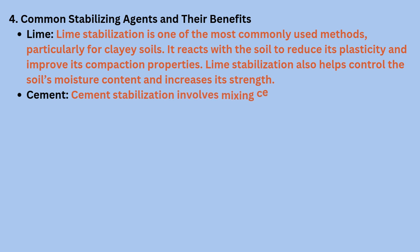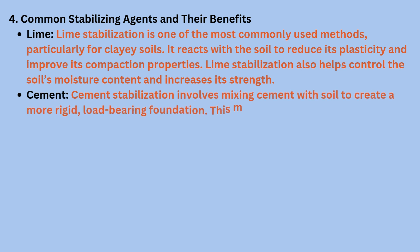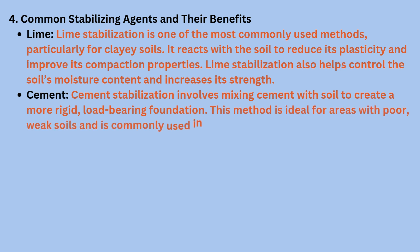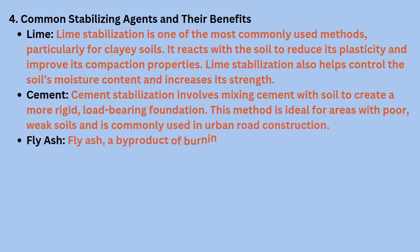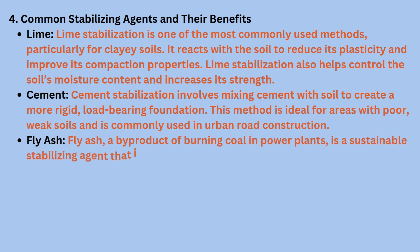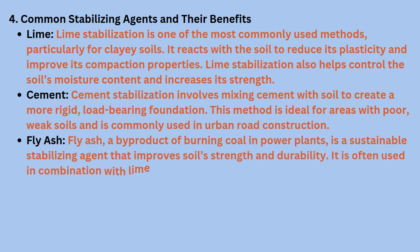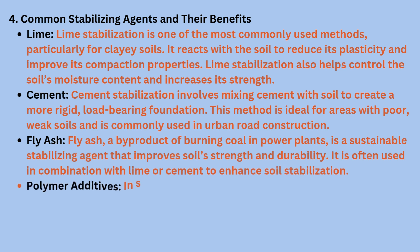Cement stabilization involves mixing cement with soil to create a more rigid, load-bearing foundation. This method is ideal for areas with poor, weak soils and is commonly used in urban road construction. Fly ash, a byproduct of burning coal in power plants, is a sustainable stabilizing agent that improves soil strength and durability. It is often used in combination with lime or cement to enhance soil stabilization.